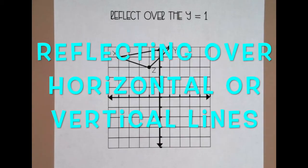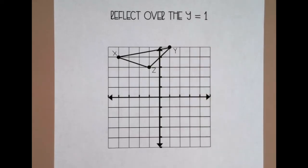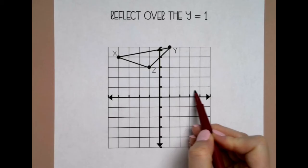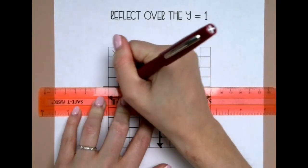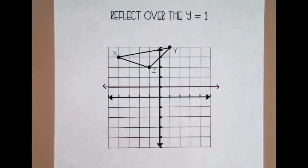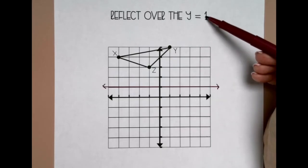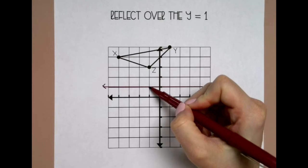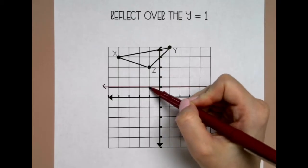When you reflect over a horizontal line or a vertical line, such as y equals 1, the first thing that I would do is darken in the line of reflection. So y equals 1 means it's going to be a horizontal line going through 1 on the y-axis. So I'm going to use my ruler and darken that in. There are no coordinate rules for horizontal or vertical lines other than the y-axis and the x-axis, so the only method is to count. Starting at my line of reflection, I'll pick a point - I'm going to start with Z. Z is 2 up, so I'm going to go back to my line of reflection and count 2 down.